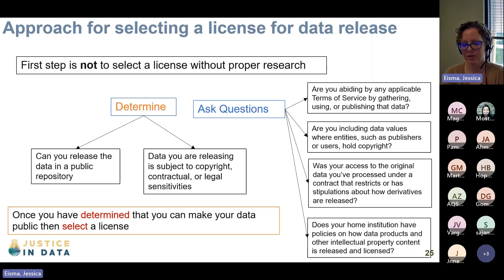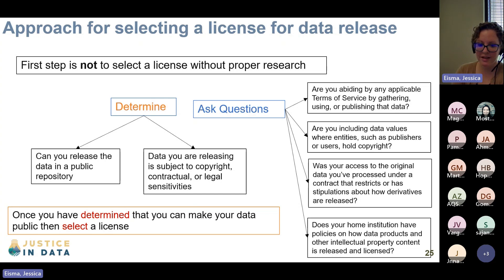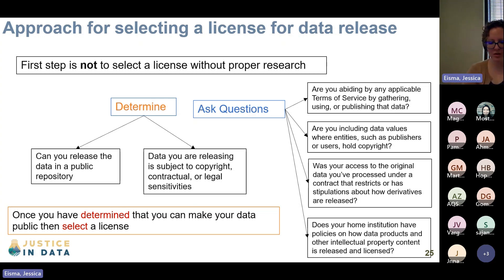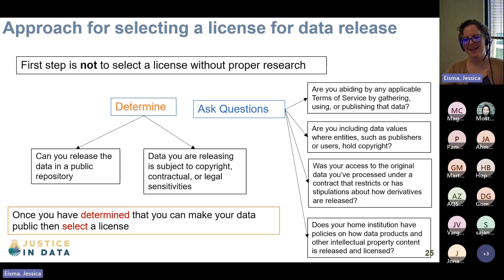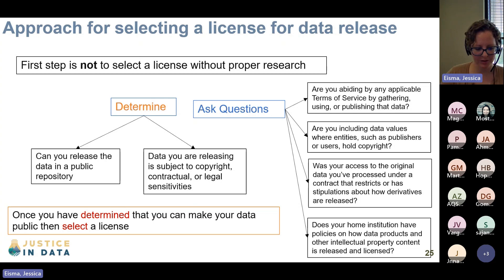Make sure you include data values where entities such as publishers or users hold the copyright — always check whether your data was initially copyrighted. If you have worked with a dataset and created a derivative of it, make sure you processed it under the correct license and understand whether you were allowed to make derivatives of that work, as that will dictate whether you can actually publish a derivative. Also, always check with your employer or home institution on whether or not they have policies on how data products and other intellectual property can be released and licensed, because some universities might have different rules, especially when it comes to work that could be considered proprietary as a result of university investment.